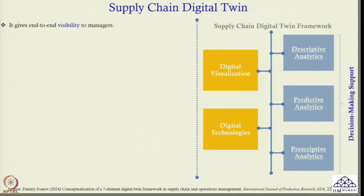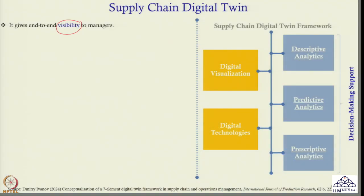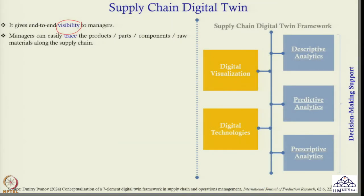Now let us look at the advantages of supply chain digital twin. First, it gives end-to-end visibility to managers. Since digital twin is a replica of a physical supply chain, it provides a lot of visibility. I know exactly where my factory, DCs and customers are located. I also know how the movement of products happens from factory to DC, and from DC to customers. Additionally, managers can easily trace products, parts, components and raw materials along the supply chain — traceability is an important component of digital twin.